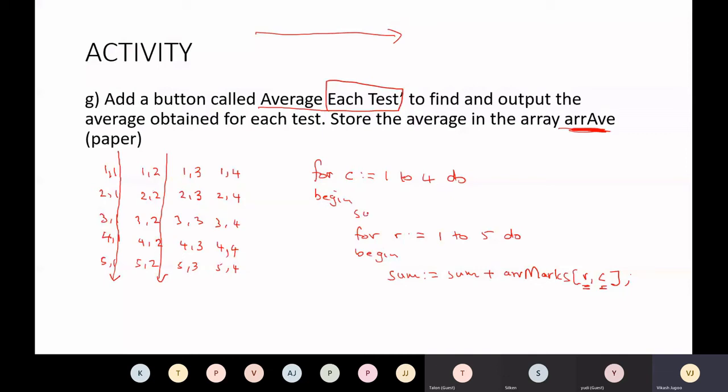And here, set your sum to 0. So each time it moves to a new column, it's 0. Remember that the inner loop, this is now the inner loop. So this is going to go five times. C is going to be fixed at 1. So just to show you, I've got R and C. So C is going to be 1. And R is going to change 1, 2, 3, 4, 5.